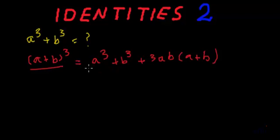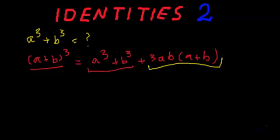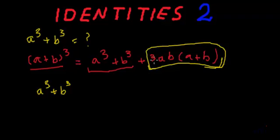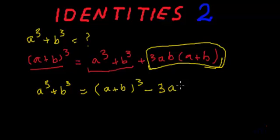From here we want to derive the value for a cube plus b cube. So if we subtract the 3ab(a+b) term from both sides of this equation, and flip the sides, we will get a cube plus b cube equal to a plus b whole cube minus 3ab multiplied by a plus b.